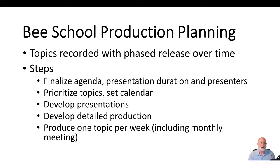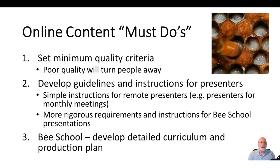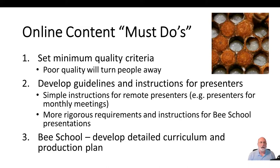There are several things that we must do. In order to have the quality that ensures people get the value in the content and come back to view more, we need a minimum criteria — a minimum standard on the quality of the video and audio. Guidelines for how to produce and present it are critical to maintain that quality. We should also develop a detailed curriculum and production plan for bee school, since that's probably the most complex of all our events.